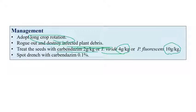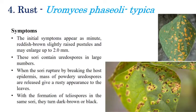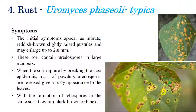The next disease is rust, caused by Uromyces phaseoli typica. Small reddish-brown to black color raised pustules can be seen on leaves — the sori contain a huge amount of uredospores. Later, the sori rupture and break down into the epidermis, and all the powdery uredospores give a rusty appearance.